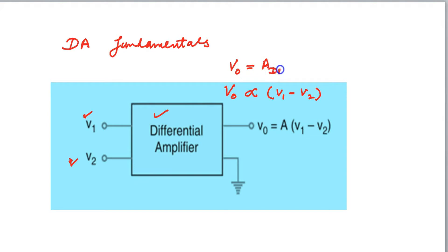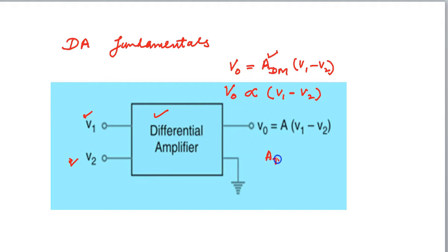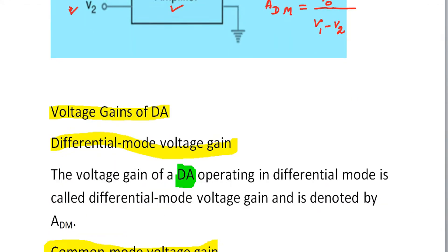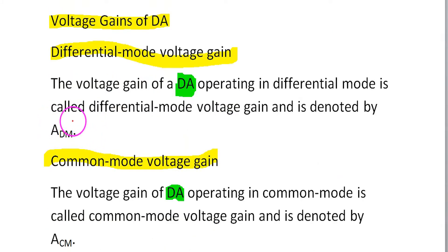Let's call this constant ADM, where ADM stands for Differential Mode Gain. In the case of an ideal differential amplifier, the Differential Mode Gain is defined as the output voltage divided by the differential signal V1 minus V2. This is the Differential Mode Voltage Gain of the differential amplifier.